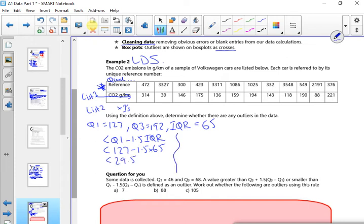Then I've got more than Q3 plus 1.5 times my interquartile range. So I've got more than 192 plus 1.5 times 65, which gives me more than 289.5.